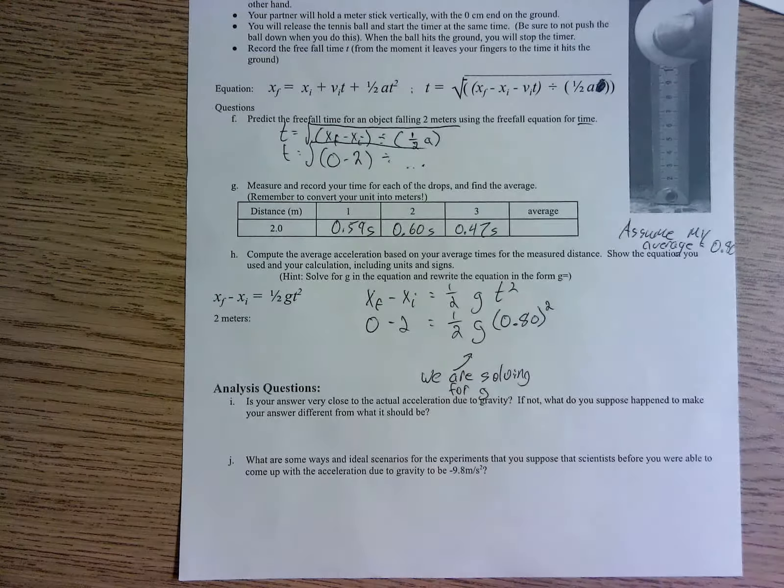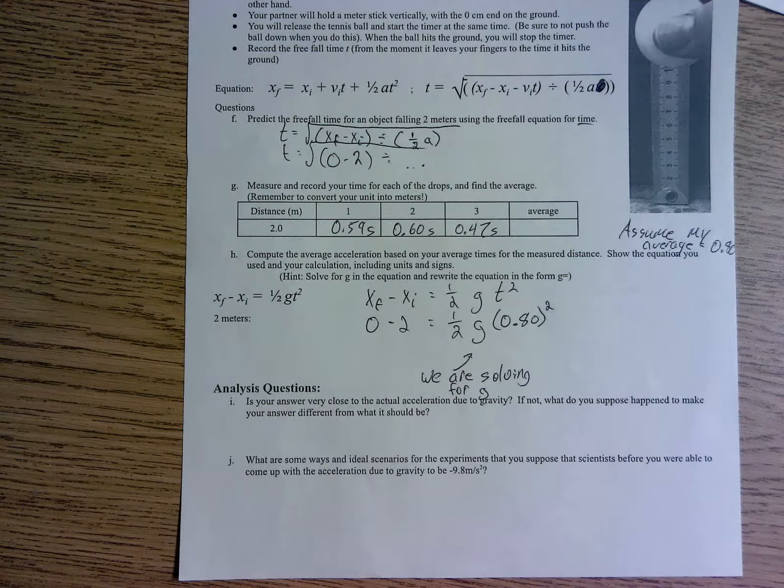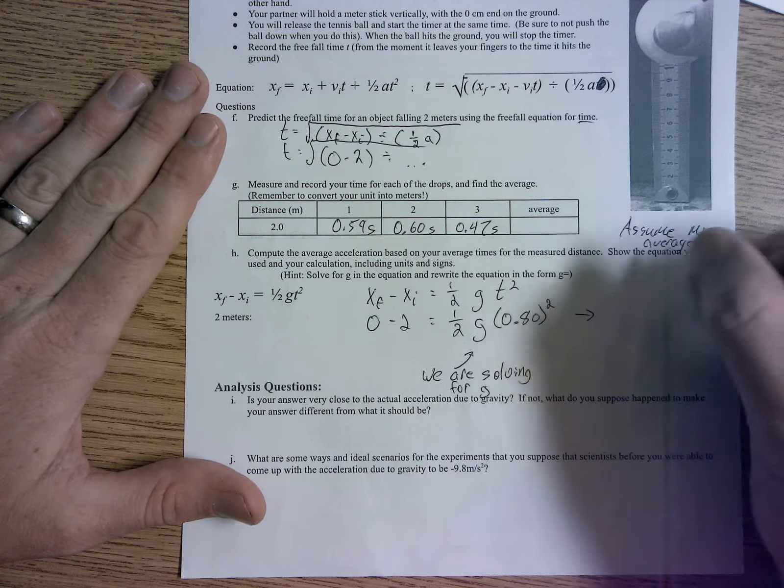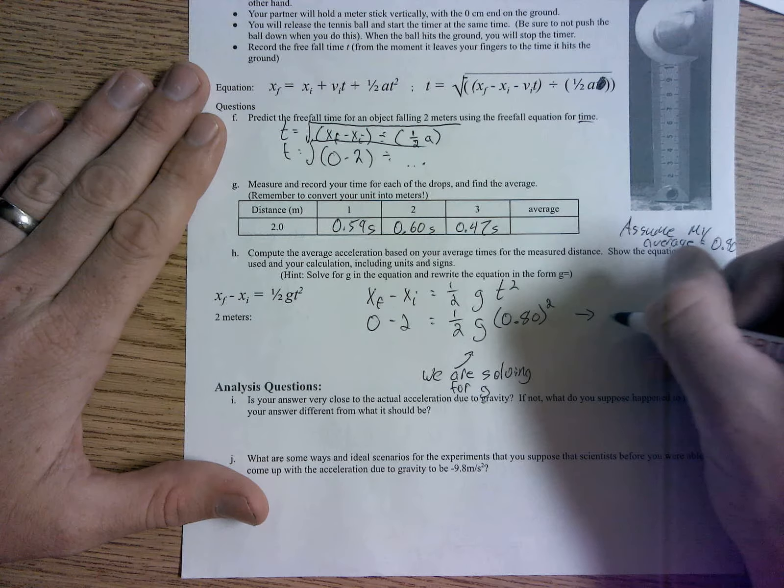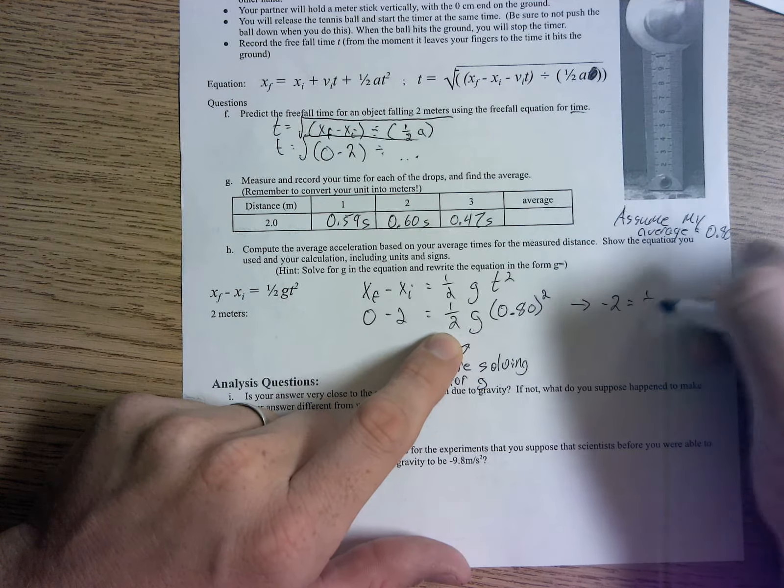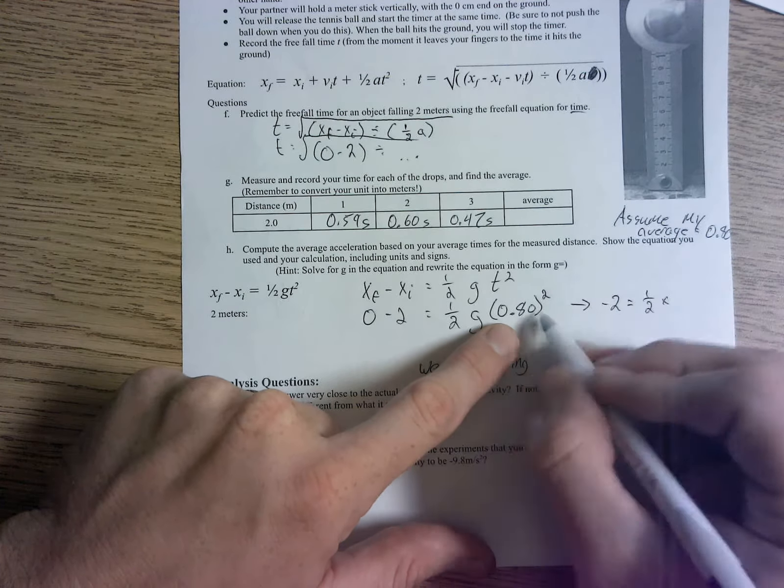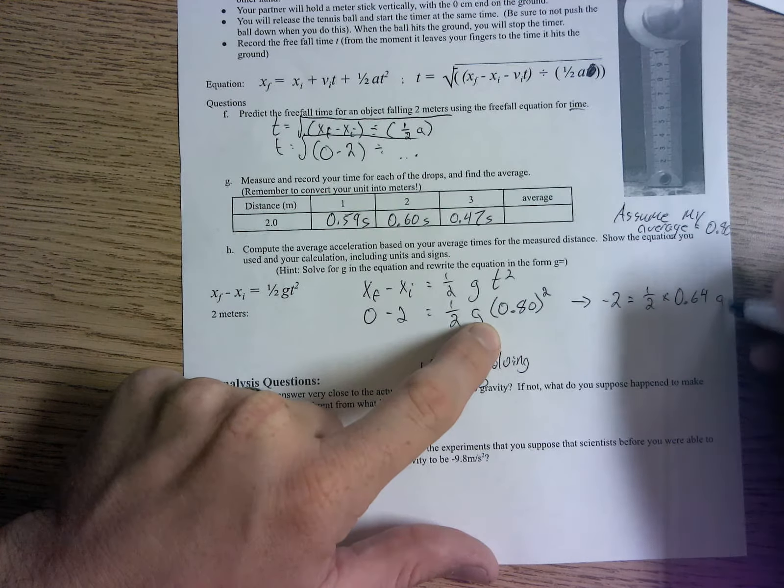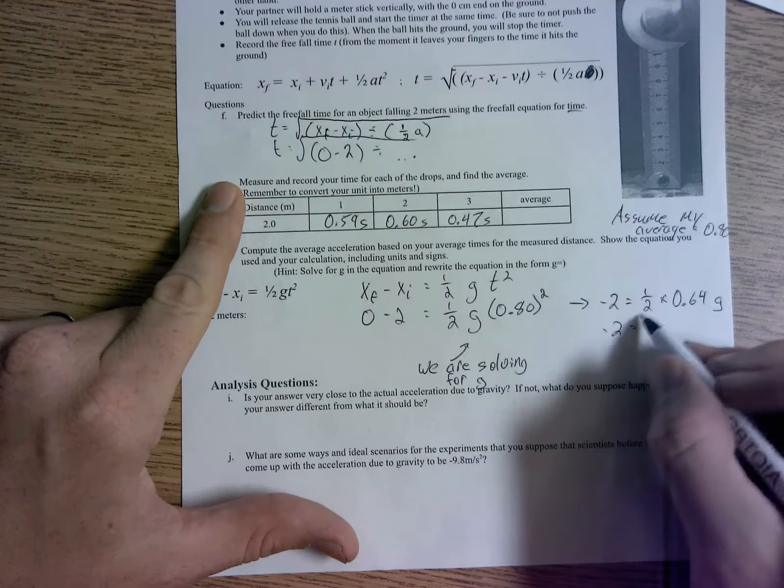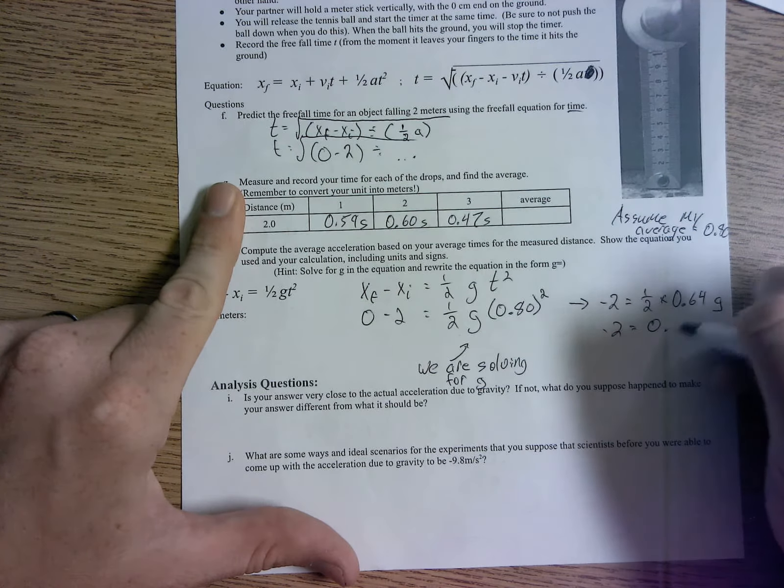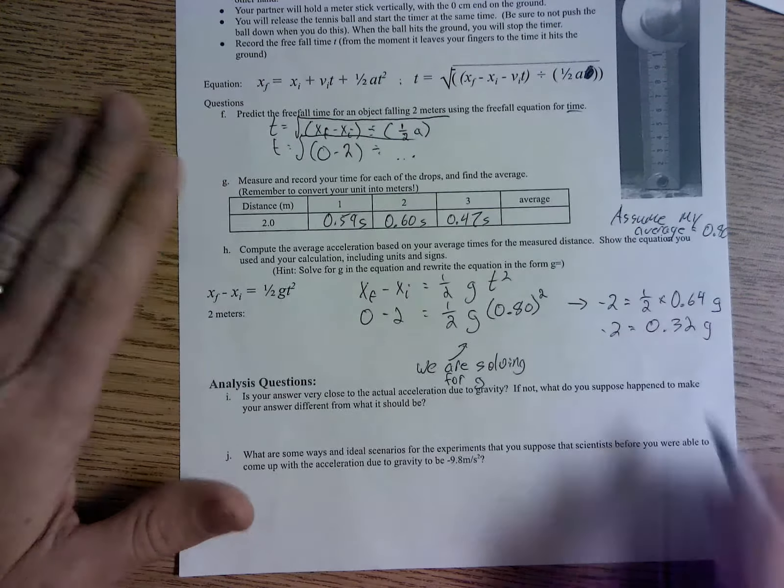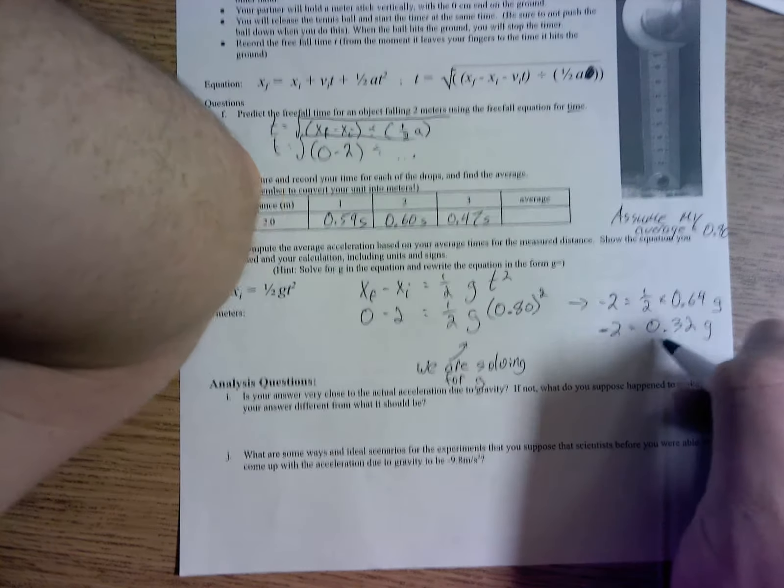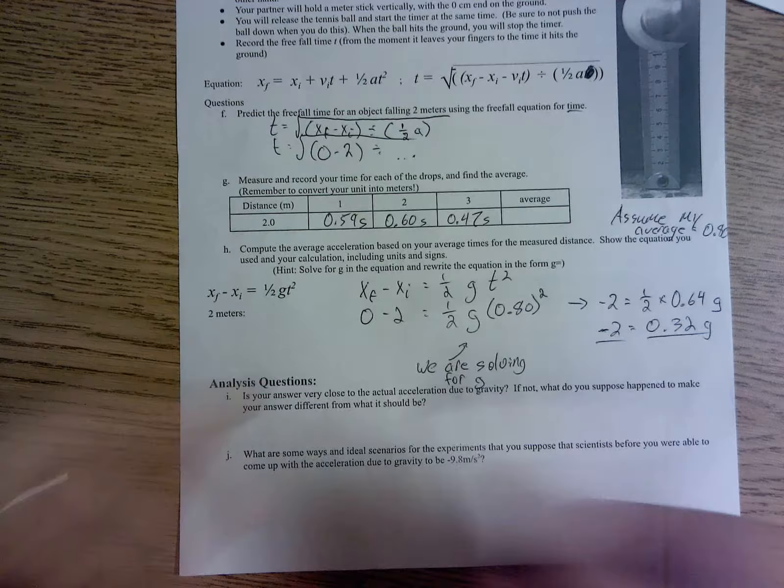0.80 squared is 0.64. So 1 half, I'm just going to bring it on all over here. 0 minus 2 is negative 2 equals 1 half times, well, 0.80 squared, that's 0.64, and then we still have g, right? Simplifying down, half of 0.64, that's 0.32 g, if you follow.